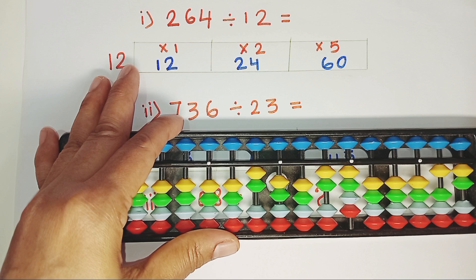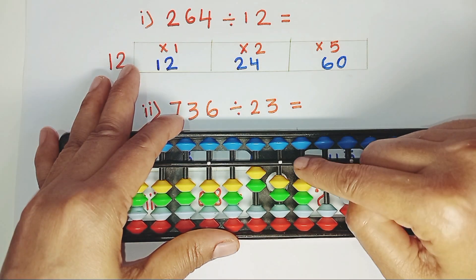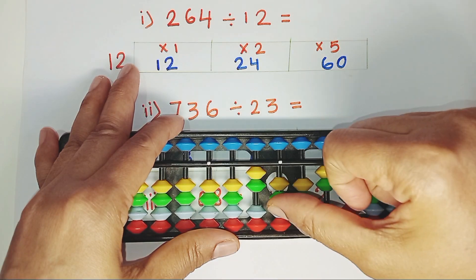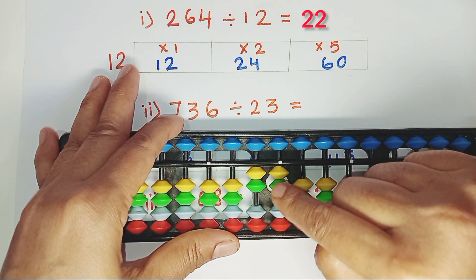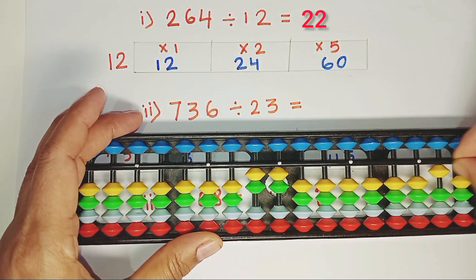24 is divisible by 12. 12 times 2, 24. Here we need to jump one rod and place the answer here. 12 times 2, 24. The answer is 2 and 2, 22. Zoom the Abacus.